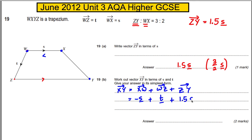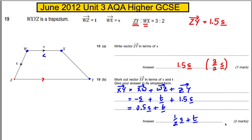Adding these up: negative s plus 1.5s gives us 0.5s, and we have plus t. So the final answer is one half s plus t. That's the last question on the paper, and it actually wasn't too bad at all.